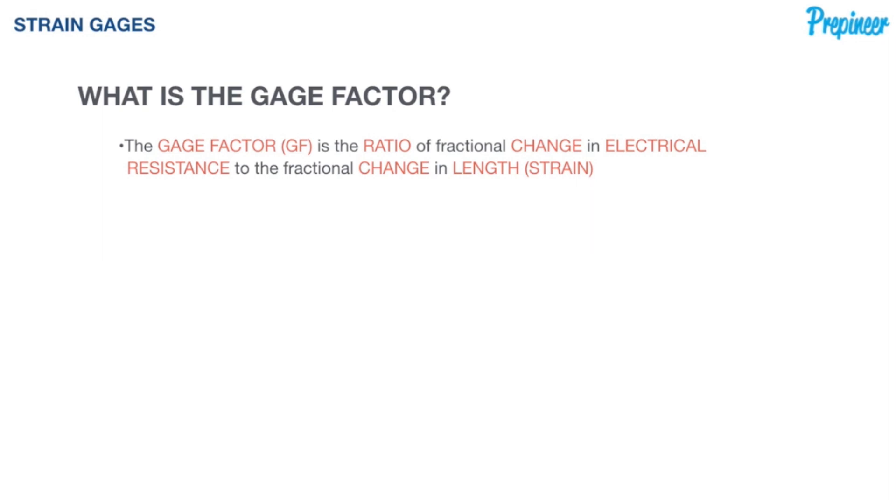The gauge factor is the ratio of fractional change in electrical resistance to the fractional change in length. So the fractional change in electrical resistance, delta R over R, to the fractional change in length, delta L over L, otherwise known as strain. Or in other terms, the gauge factor represents the ratio of change in the gauge resistance to the change in length or strain in the gauge.